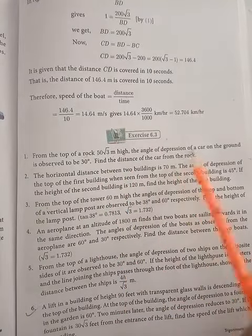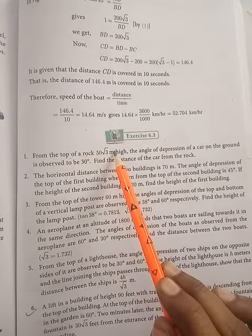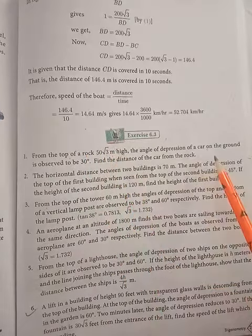The angle of depression of a car from the top of the rock, when looking down at the car, the angle of depression is 30 degrees. The angle of depression is observed to be 30 degrees.